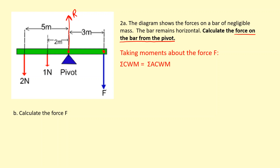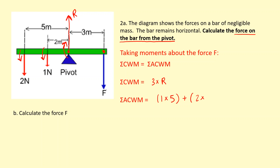Taking moments about where F is applied: sum of clockwise moments equals sum of anticlockwise moments. The reaction force R creates a clockwise moment — its distance from F is 3 meters, so the clockwise moment is 3R. For the anticlockwise moments: the 1 Newton force is at a distance of 3 plus 2 equals 5 meters, and the 2 Newton force is at 3 plus 5 equals 8 meters. That gives a total of 21 Newton meters. So 3R equals 21, giving R equals 7 Newtons.